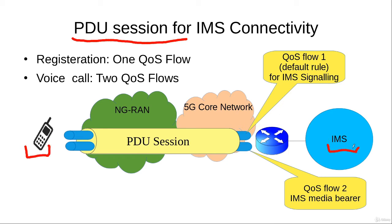It would need a PDU session with one quality of service flow, and this quality of service flow would have default parameters — that means it would be set up according to the default parameters as decided by the operator. This quality of service flow would be used for IMS signaling, in this case to register the user equipment with the IMS system.